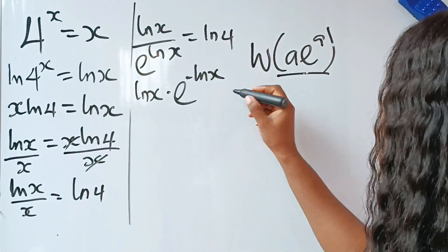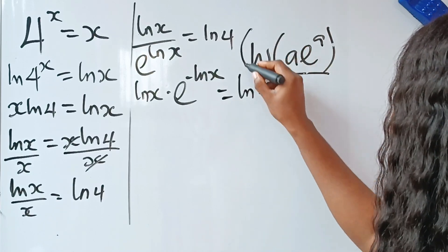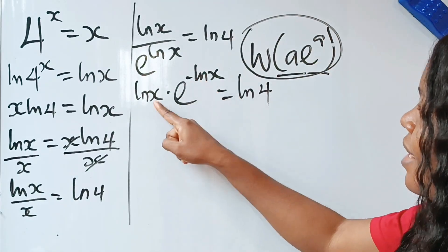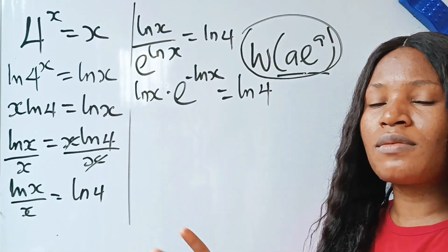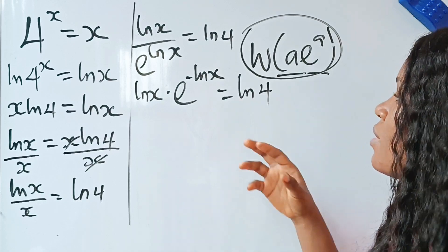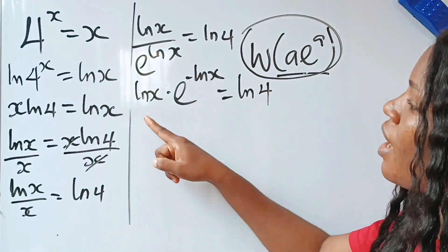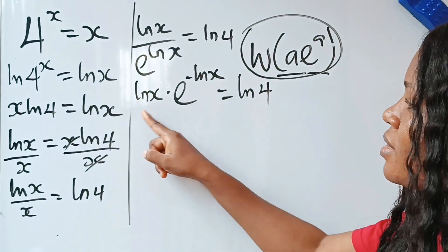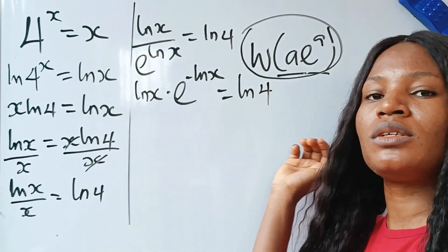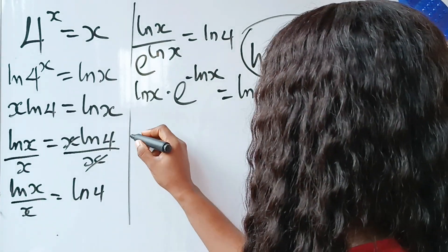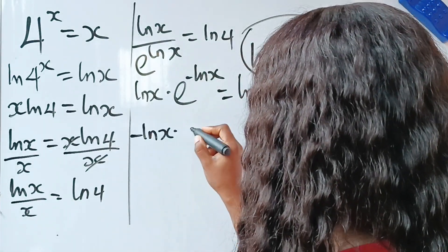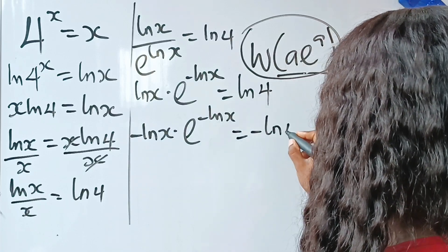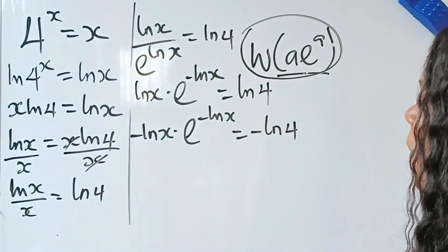Now looking at this, notice we have a minus on one side but not the other. To make both match, we multiply through by minus one. So we get: −ln(x)·e^(−ln x) = −ln(4). This is now in the form a·e^a.